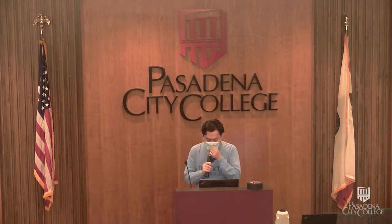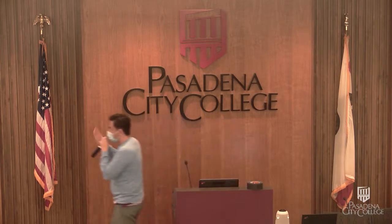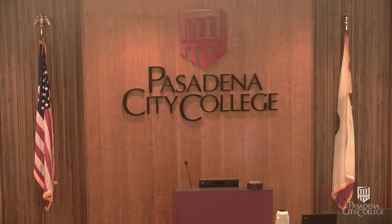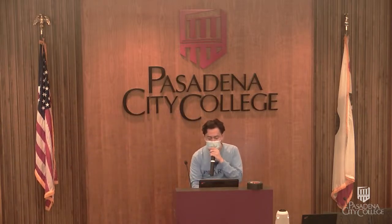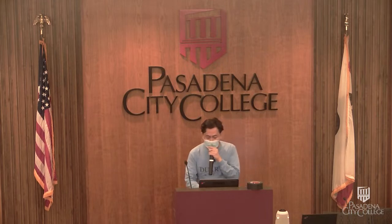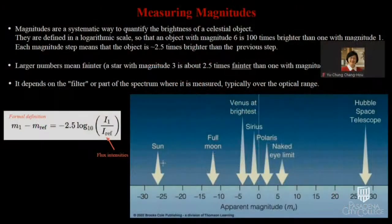One of the things you can see with the spectrum, besides that equation, is the apparent magnitude spectrum. What we can see within our eye limit is somewhere between five and ten — that's how far our eyes are able to see. But then you have certain magnitudes that the Hubble Space Telescope can see even better, and different planets have different apparent magnitudes as well.